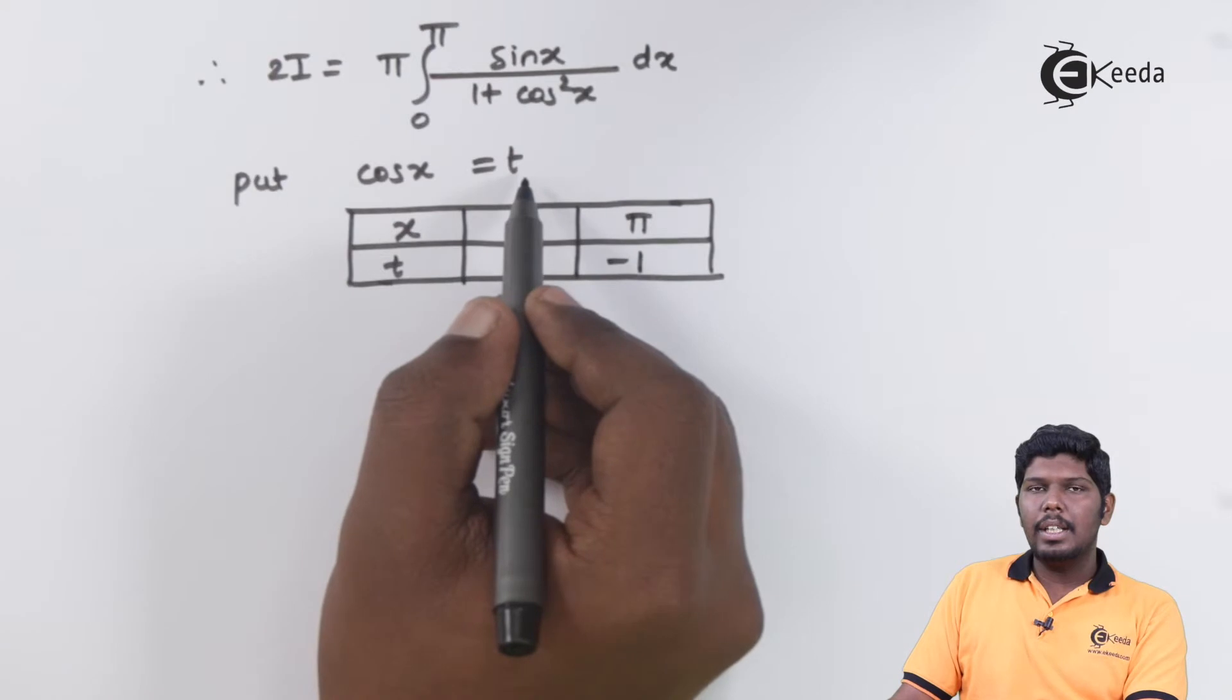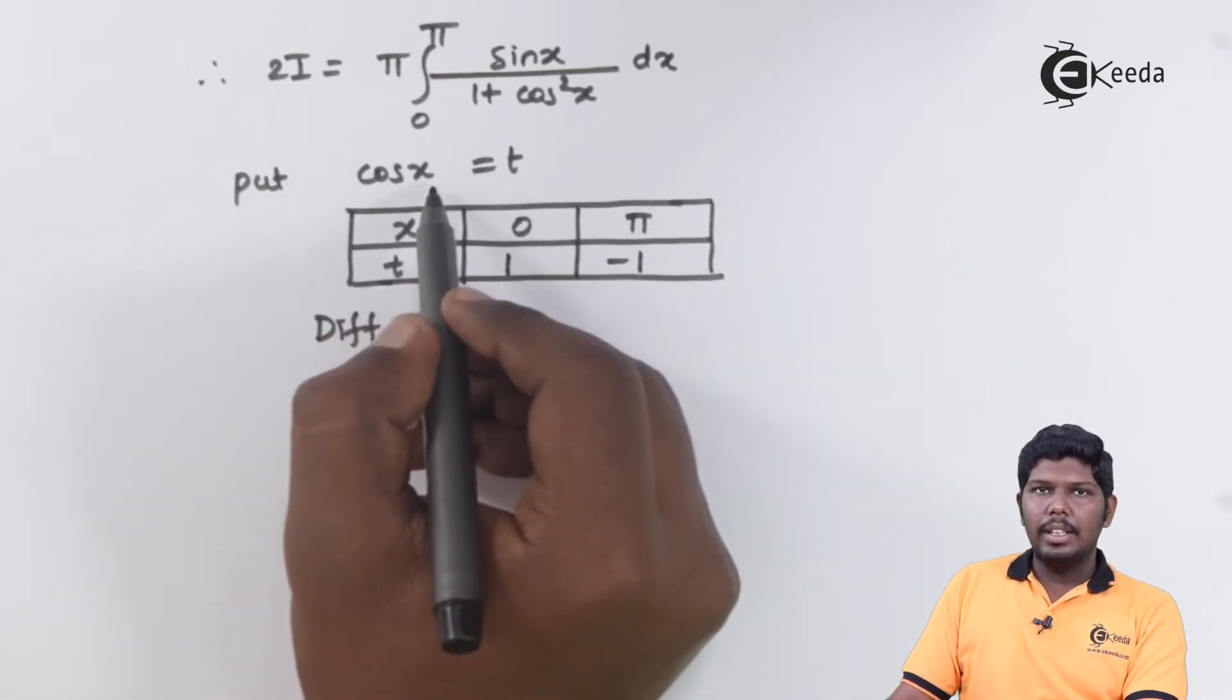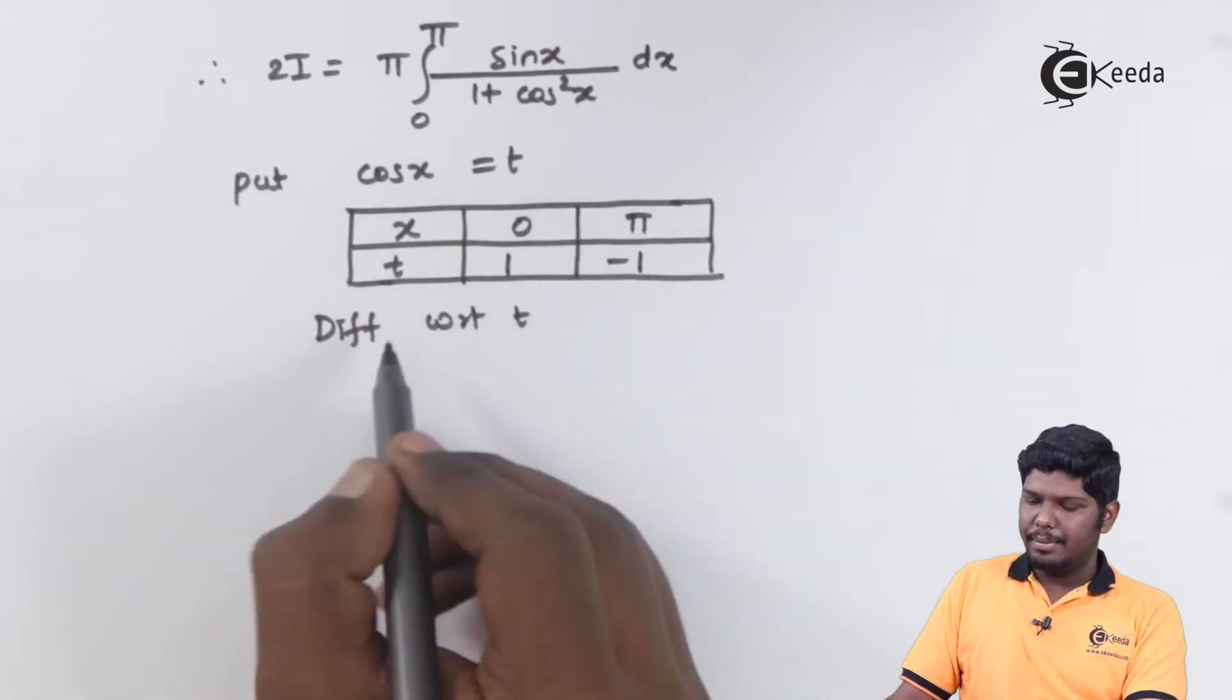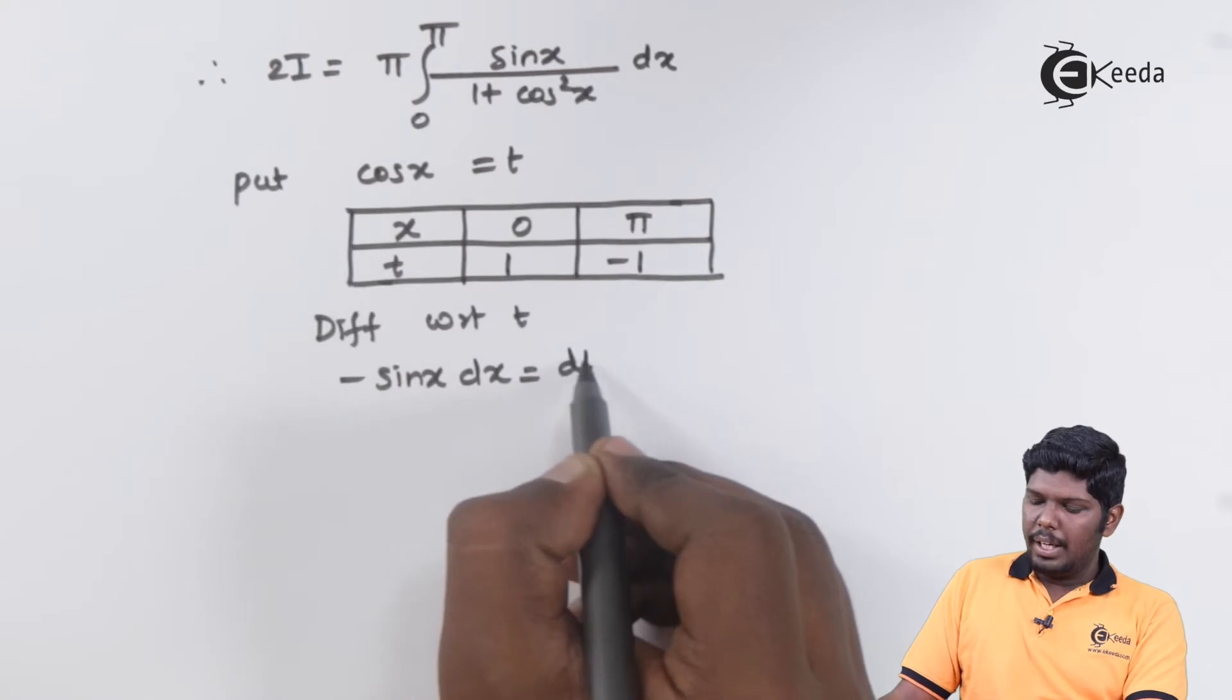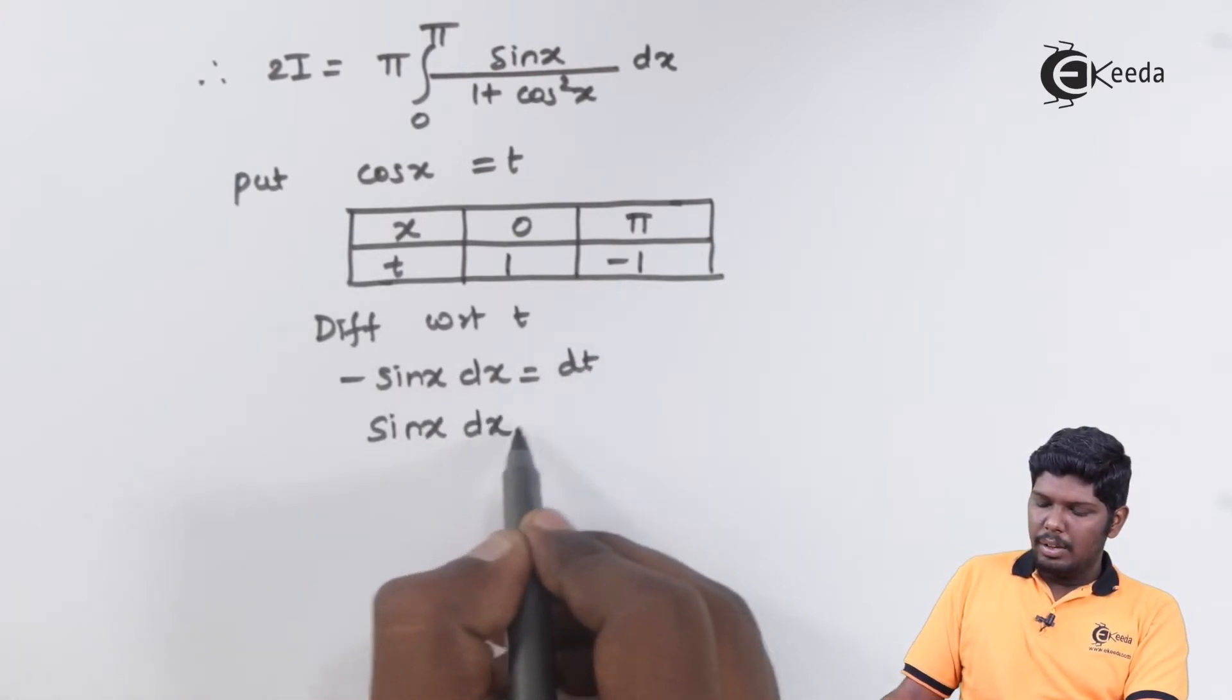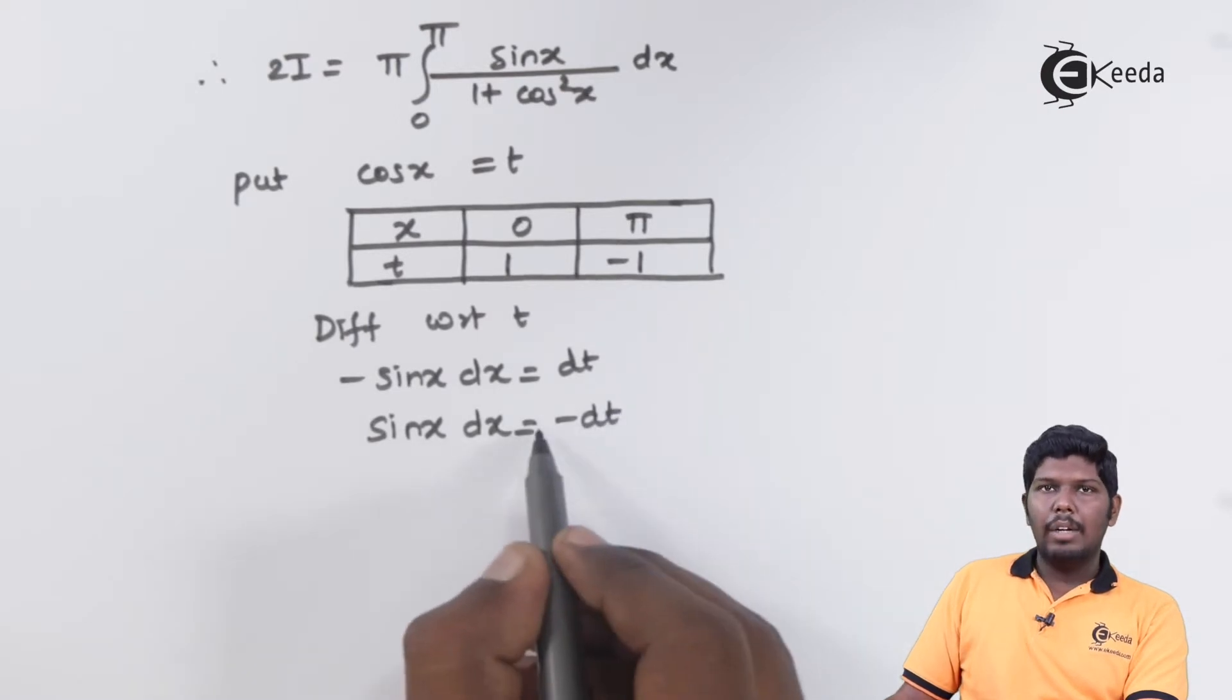Also differentiate this equation with respect to t. Derivative of cos x is minus sin x dx and derivative of t will give you dt. We need only sin x dx that will be minus dt.